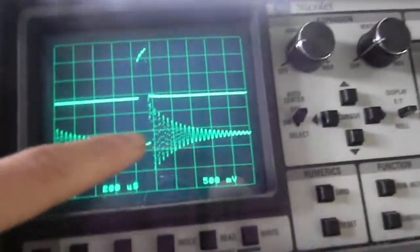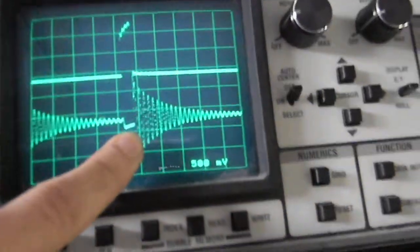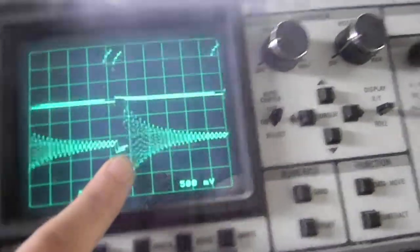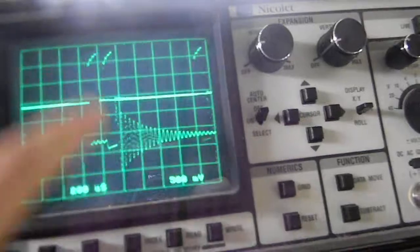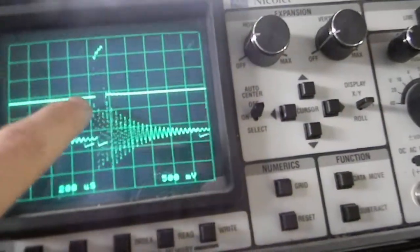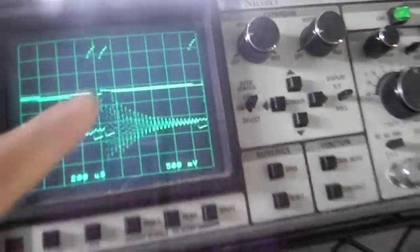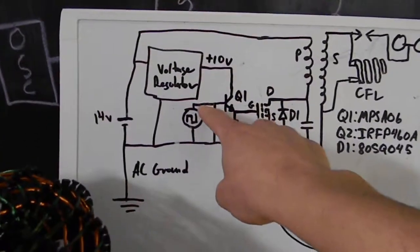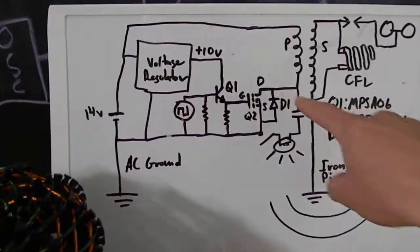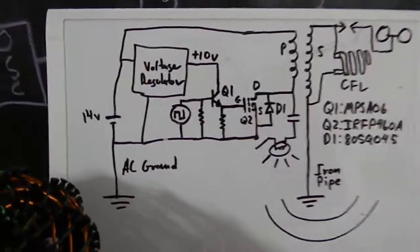So now this here is the signal on the bottom of the primary and this is the signal going into the transistor. We're looking at, we got a probe here that's the top signal and we got a probe here.